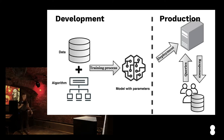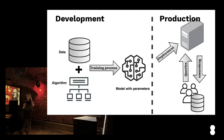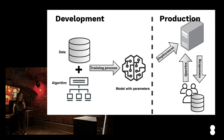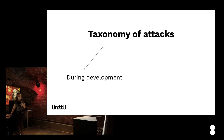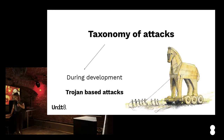Going back to our question — where might the whole thing be attacked? What do you think, which part is more vulnerable? Actually, every stage of that pipeline may be subject to different types of attacks. But as we have to start somewhere, let's consider attacks that happen during the development phase first. These are also known as Trojan-based attacks.